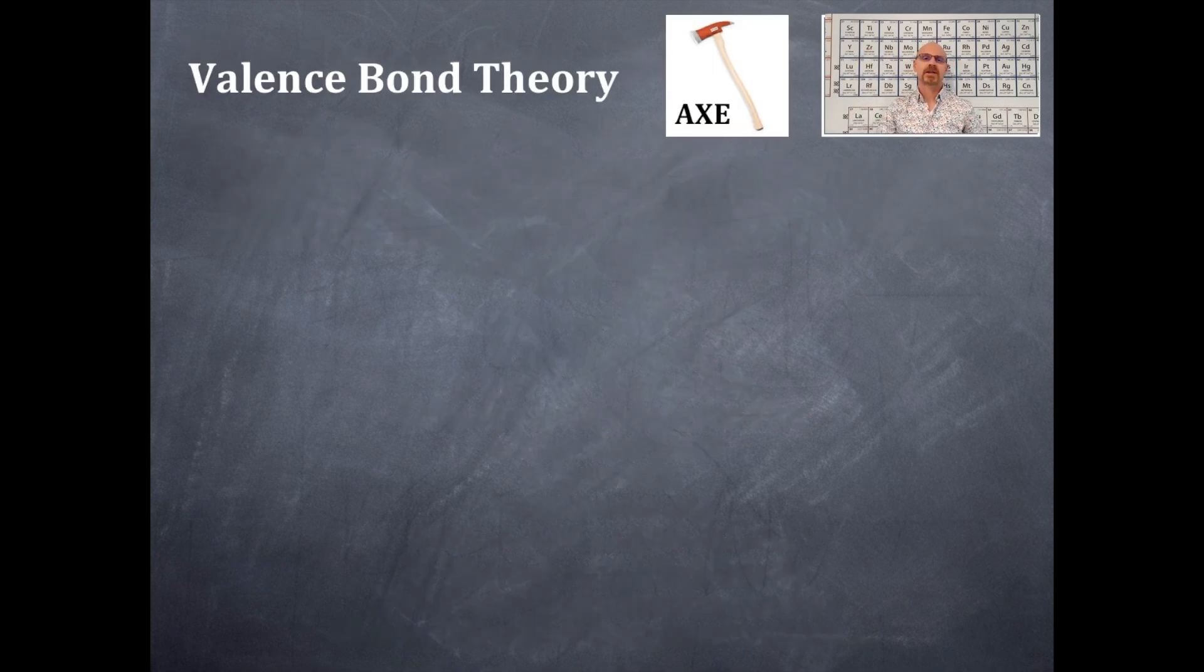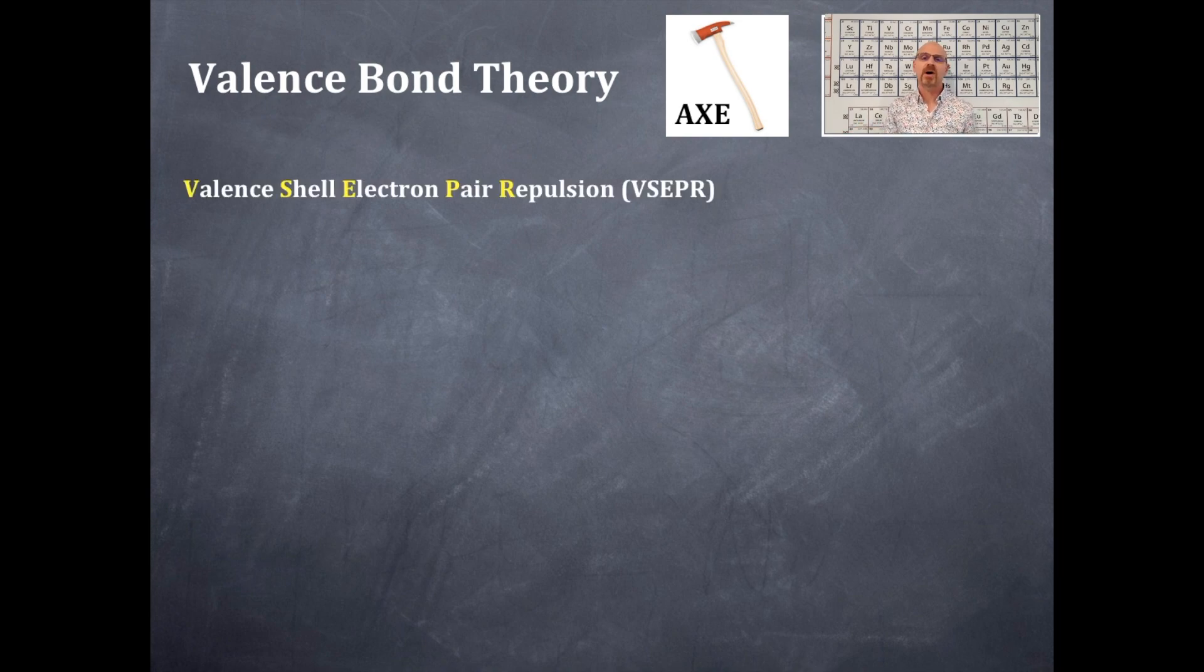Today we're talking about valence bond theory in a little bit more detail than what we have talked about before. We're going to be using what's called VSEPR, which is the valence shell electron pair repulsion.